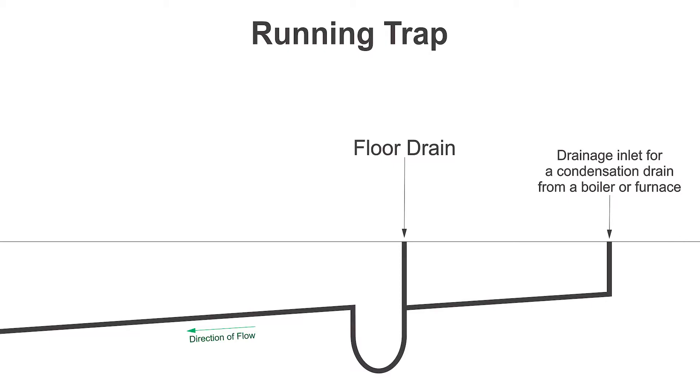A running trap is a fairly simple device. We have a P-trap with another connection going into it. In this example, I've got a floor drain with its own P-trap, and branching off to the side I've got a drainage inlet for a condensation drain for a furnace or boiler or any condensing appliance.